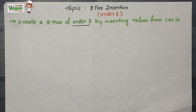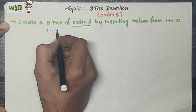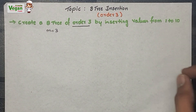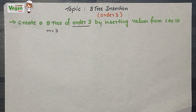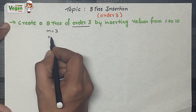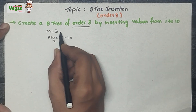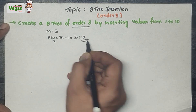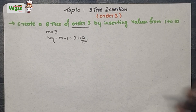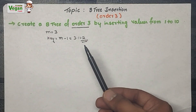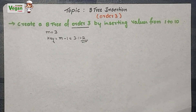Order 3 is very much easier than order 4 and order 5. The M value is 3, that is the order of the B-tree. The order tells us the maximum number of children a node can have. The key value is M minus 1, that is 3 minus 1 equals 2. So in a node, a maximum of 2 values can be stored, and a node can have a maximum of 3 children.